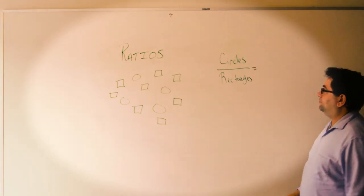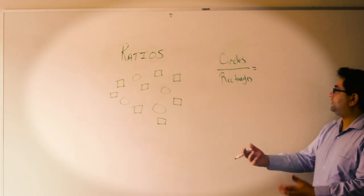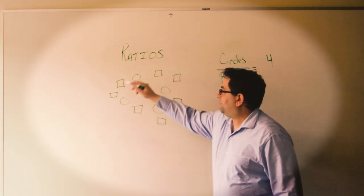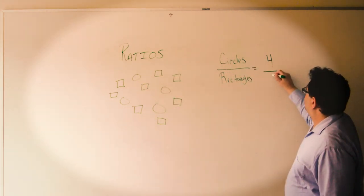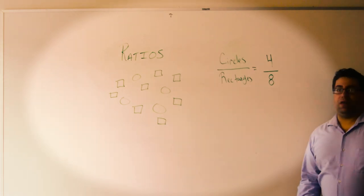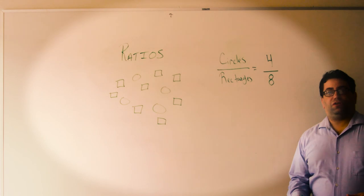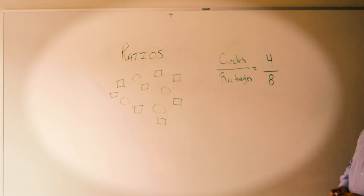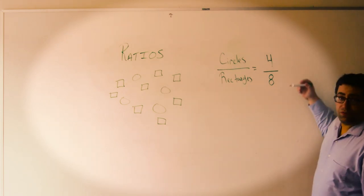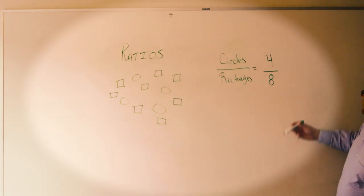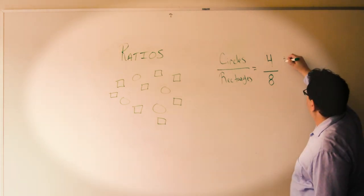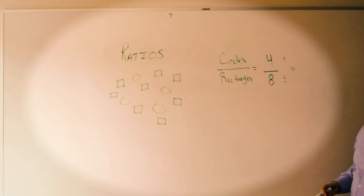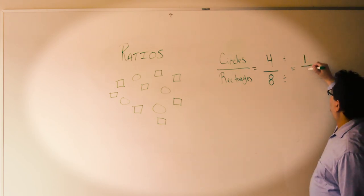All you have to do is count up the number of circles — we said there were 4. We count up the number of rectangles: 1, 2, 3, 4, 5, 6, 7, 8. Then we have to use divisibility to put this in its simplest form. I know that 4 goes into 4 and 4 goes into 8, so I can divide the top and the bottom to put my ratio in simplest terms: 1 over 2.